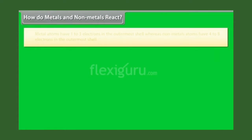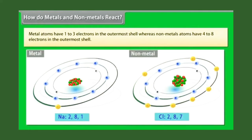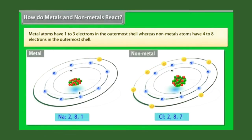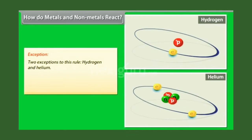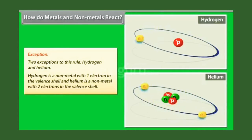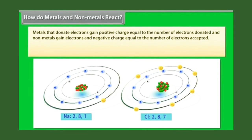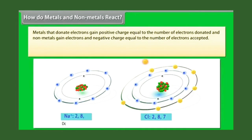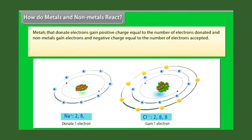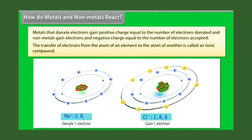How do metals and non-metals react? Metal atoms have one, two, or three electrons in the outermost shell, whereas non-metal atoms have four to eight electrons in the outermost shell, with exceptions such as hydrogen and helium. When a metal atom donates one, two, or three electrons from its outermost shell to a non-metal atom that can accept those electrons, this is known as electrovalency. As a result, both atoms form the structure of an inert gas, and this transfer of electrons forms an ionic compound.